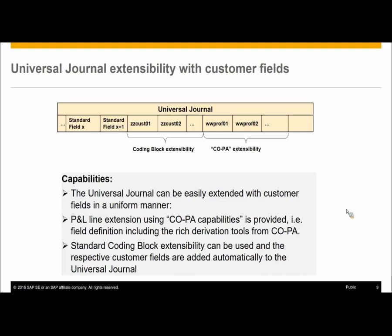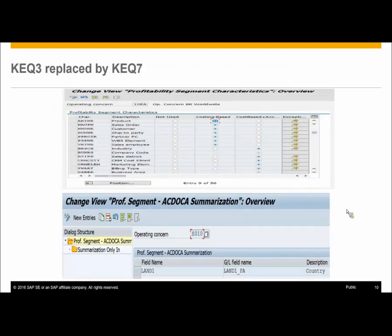Another change is that we no longer support the SEM banking operating concern in S/4HANA. Previously customers could have a separate operating concern for banking, but that is no longer available. If you migrate to SEM and had only costing-based active before, after migration KEQ3 settings are migrated to KEQ7 — we no longer have KEQ3. If you activate account-based after migration, or had both account-based and costing-based before migration, then the settings are lost and you have to maintain them manually in KEQ7 after migration.